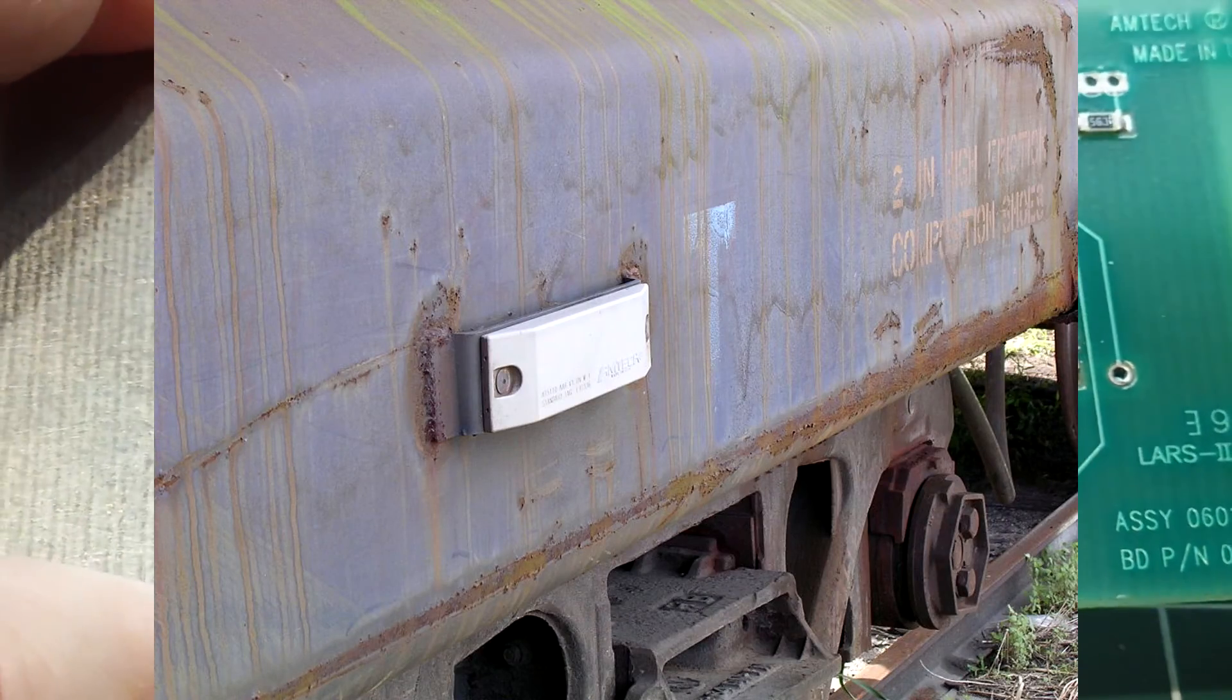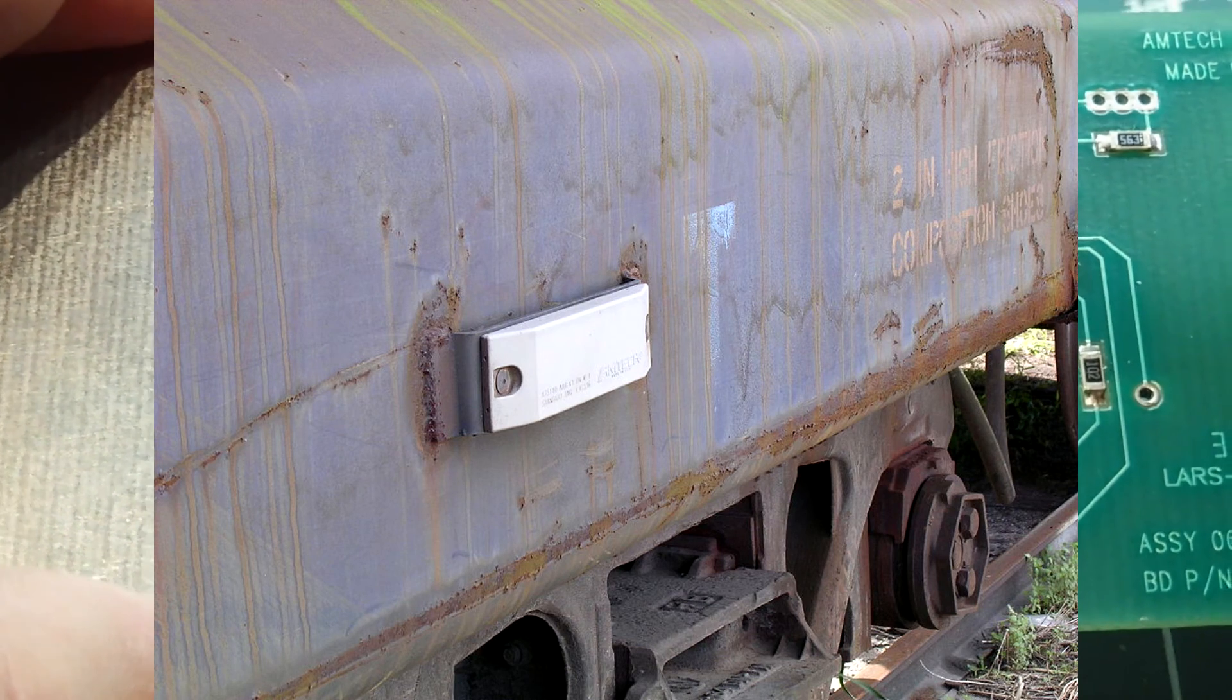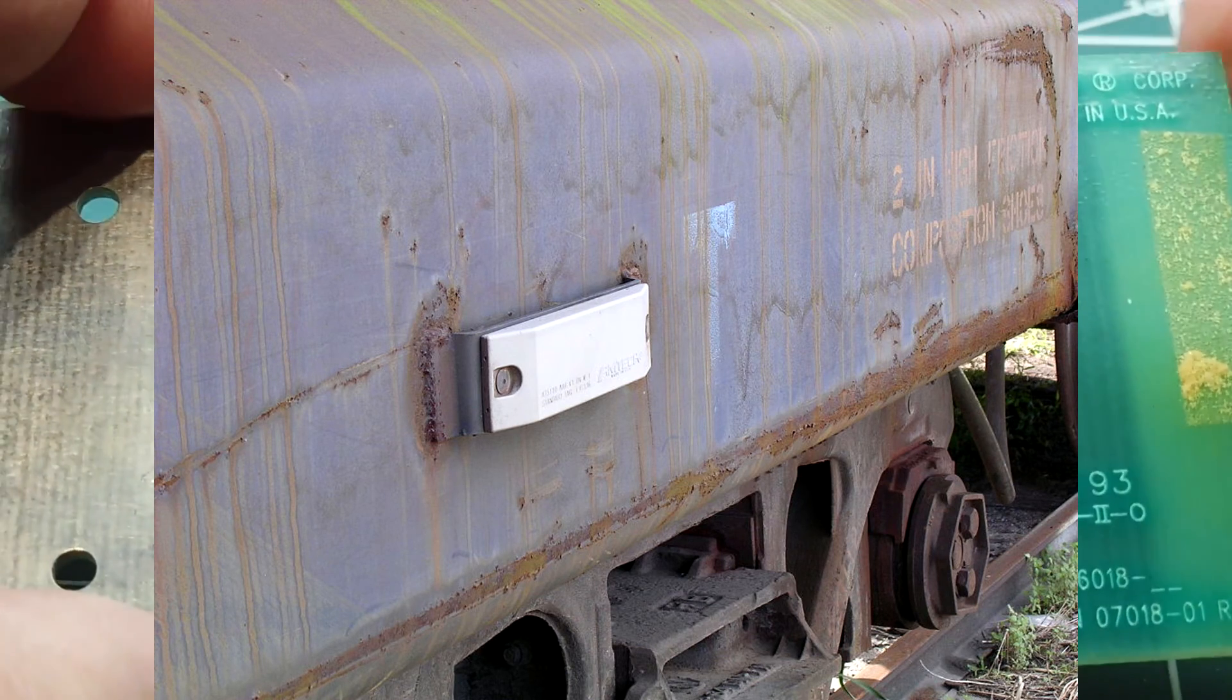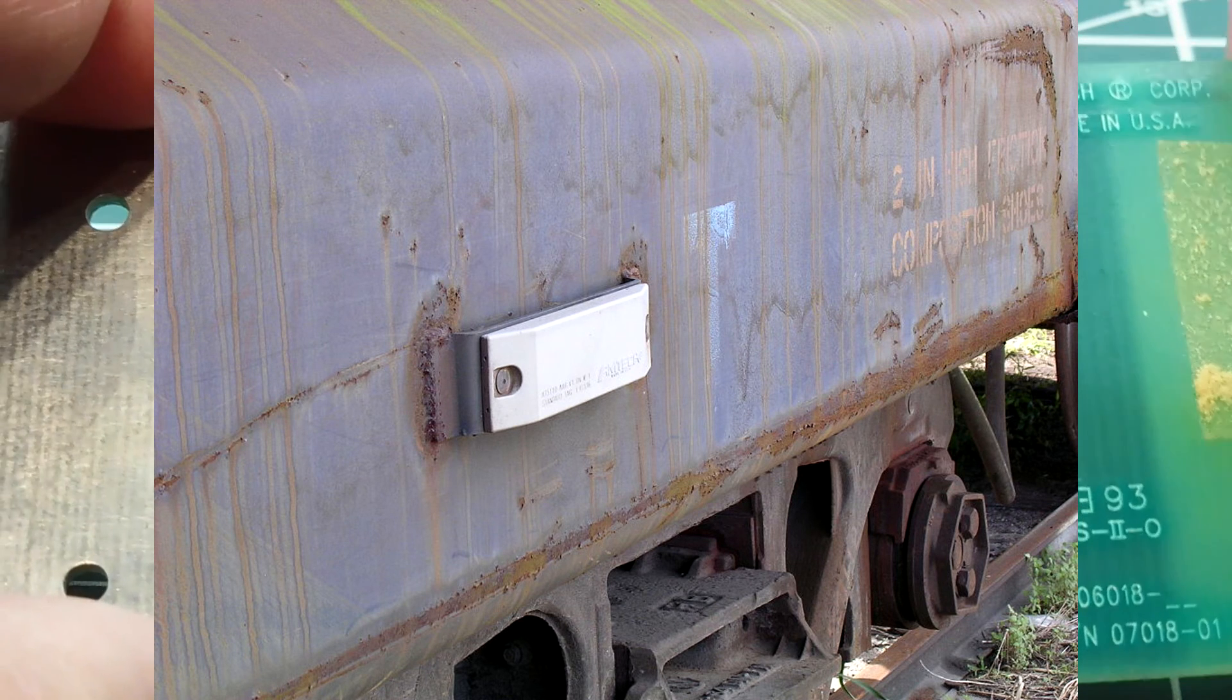So next time you see one of these tags on a rail car or a shipping container, you know that it doesn't contain a battery, and it uses backscatter to extract the data.